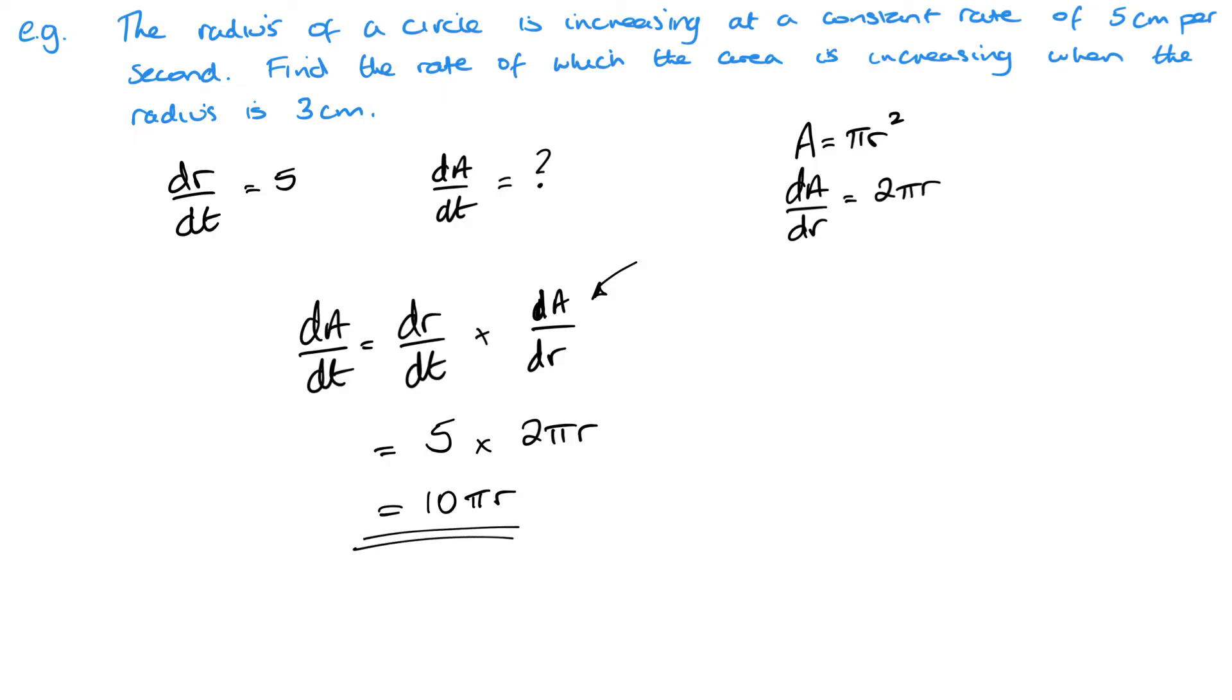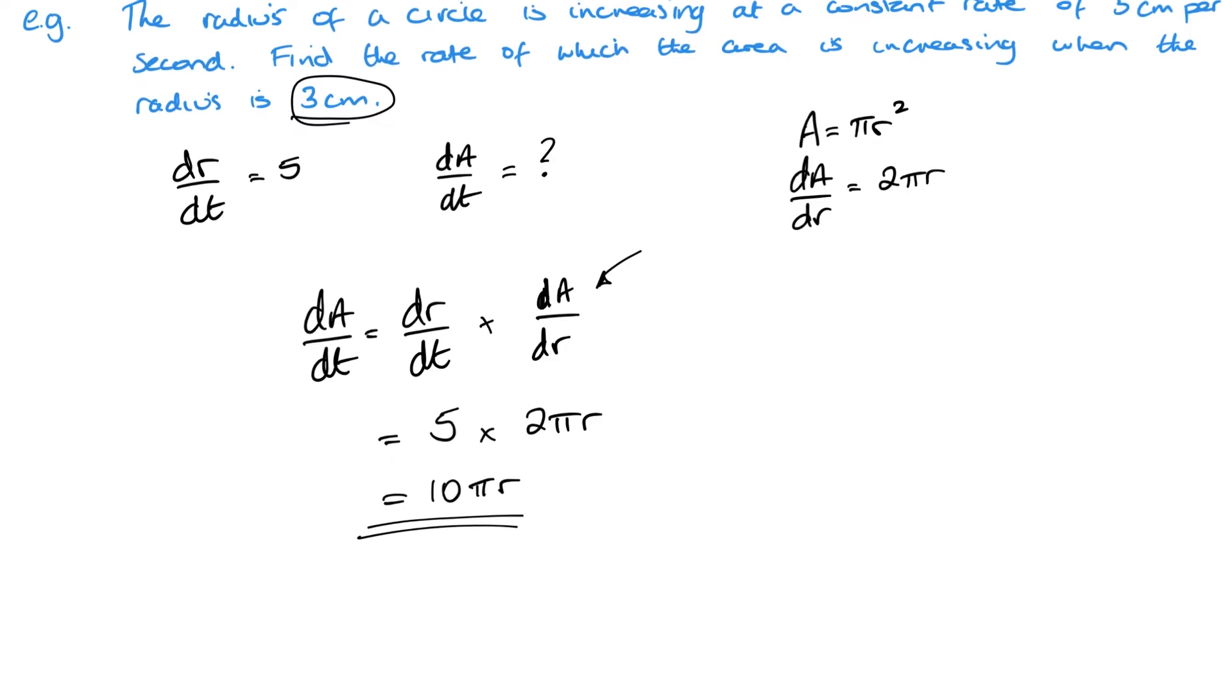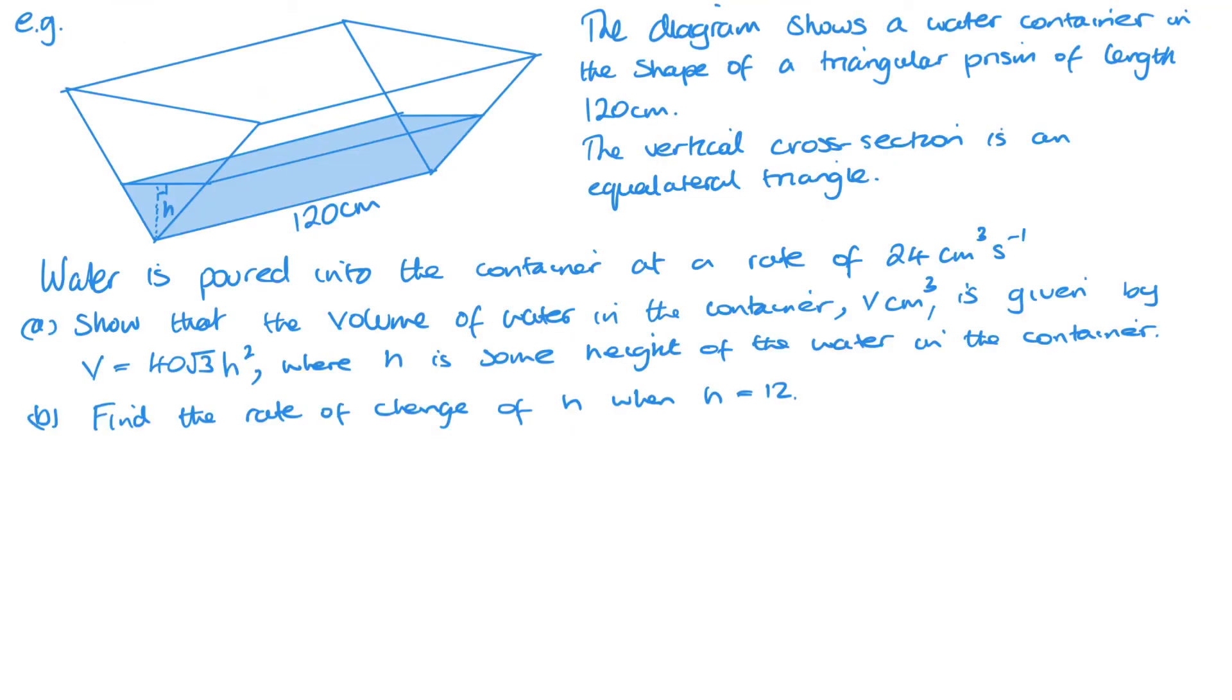And by answer, I should really say that's the expression because there is one more step that we need to do. We need to find the value when the radius is 3. So when r equals 3, dA/dt is 10π times 3, which is 30π.